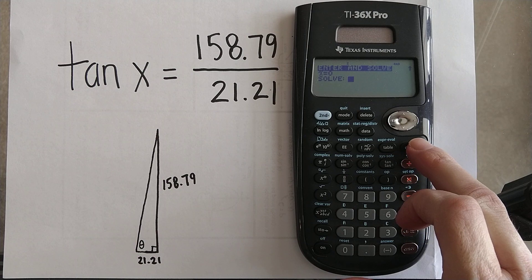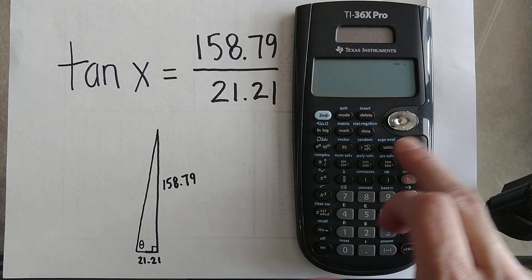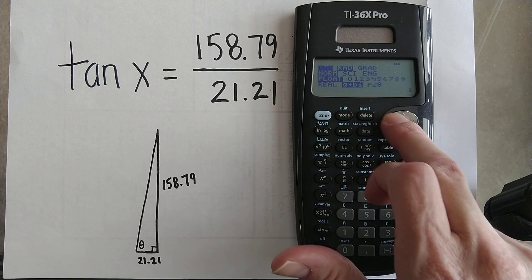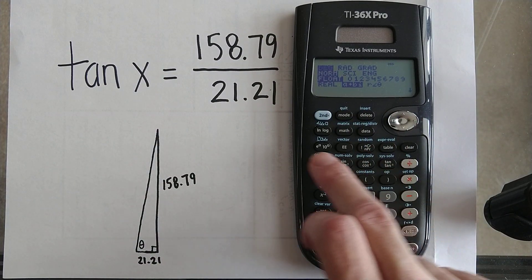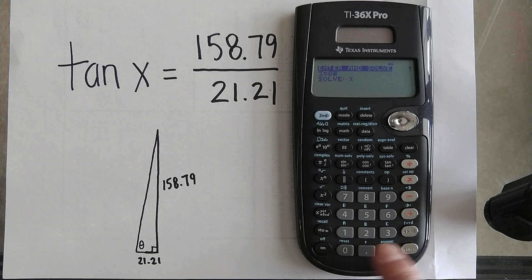Oh, I just noticed this is in radians. I'm going to stop it real quick. Sorry about that. Mode, change it to degrees. I don't know what I was thinking there. Number solver. It's still got our equation in there. We'll start at zero. Let's go.